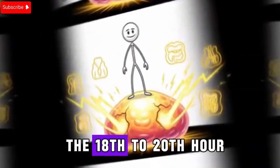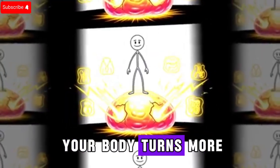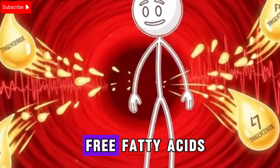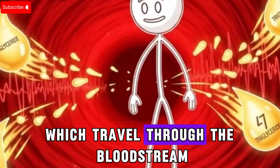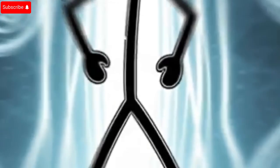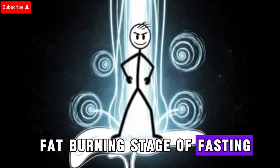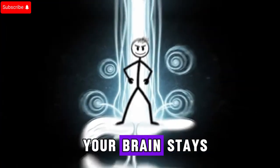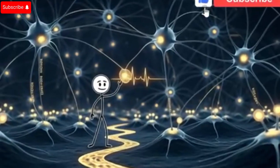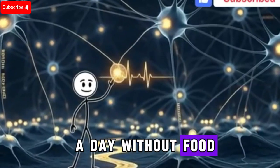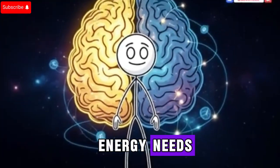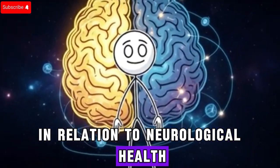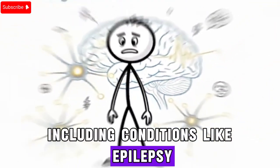At this point, around the 18th to 20th hour, your body turns more aggressively to fat stores for energy. Triglycerides in fat cells are broken down into free fatty acids, which travel through the bloodstream to fuel your muscles and organs. This is the true fat-burning stage of fasting. The liver processes some of these fatty acids into ketones, ensuring that your brain stays well-supplied with energy. In fact, after nearly a day without food, ketones can provide up to half of your brain's energy needs.